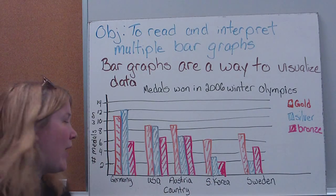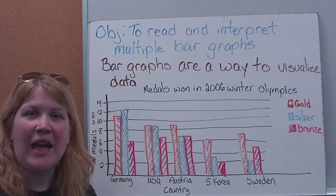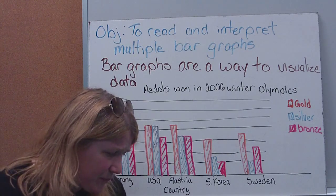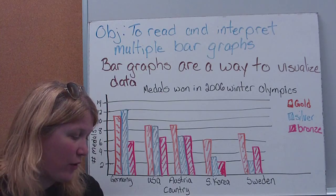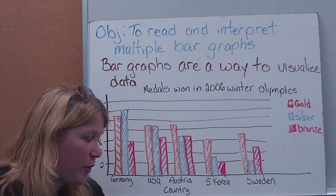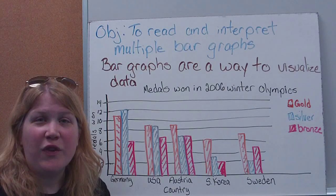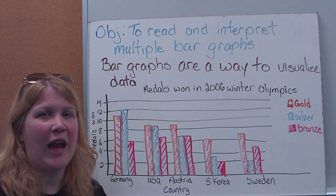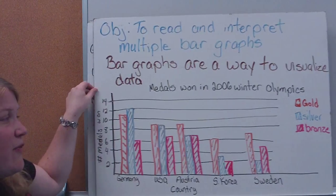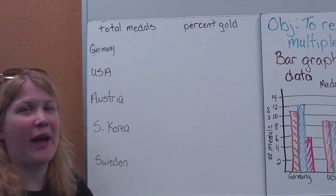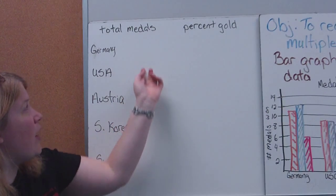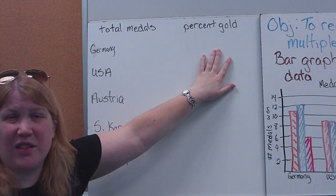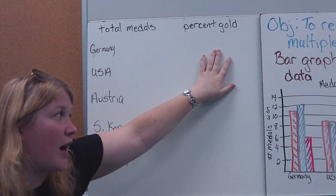You can also use this for comparing — for example, Germany compared to USA — and draw different conclusions. So what we're going to look at is interpreting graphs: what do we know about graphs and how do we interpret the information on them? What we're going to do is figure out the total number of medals each country won, and then calculate what percent is gold. This is good — we're reviewing some older concepts as well.